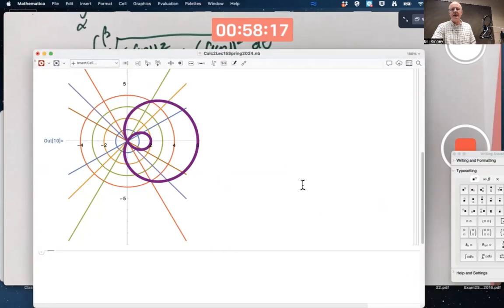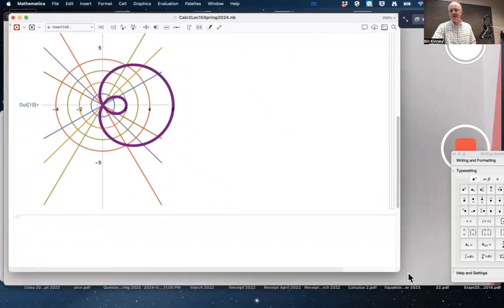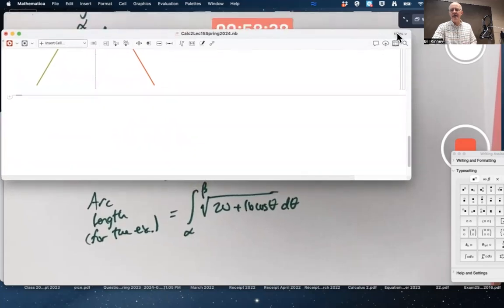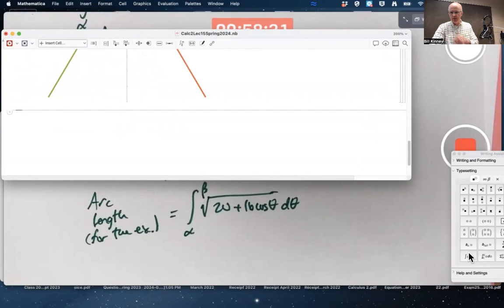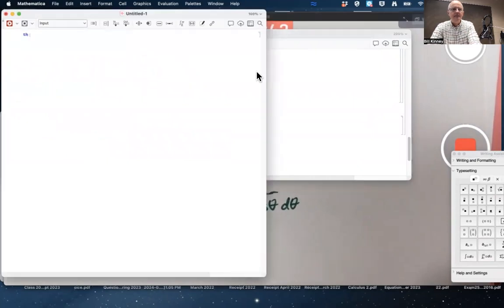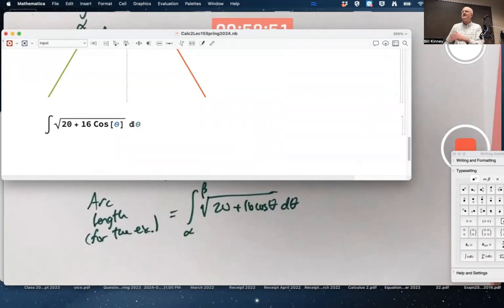You might even call it impossible in some sense. In other senses, you could call it possible. What do I mean? If you did a pure anti-derivative problem, integrate square root of 20 plus 16 cos θ dθ. I keep making that mistake today. Sorry. dθ. What happens? Special functions happen. Elliptic E. Something new.